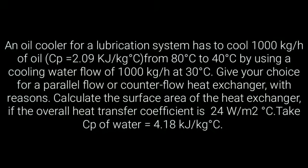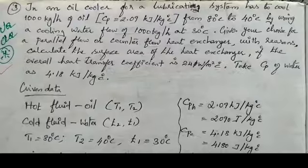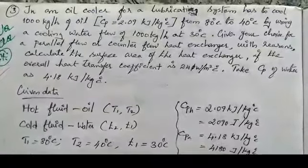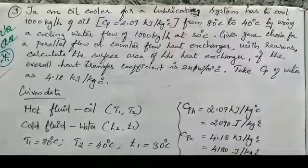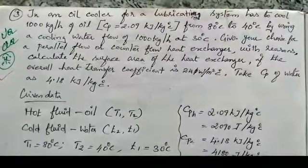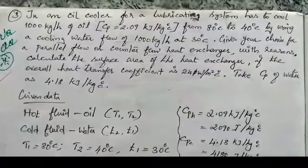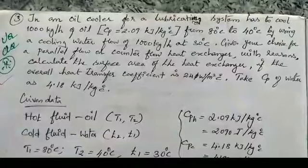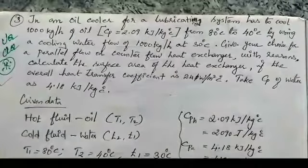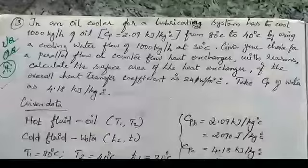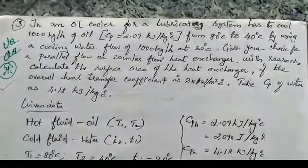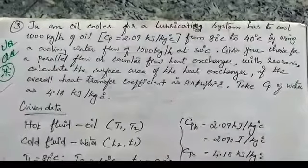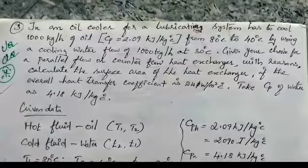Question 1: In an oil cooler for a lubricating system, we have to cool 1000 kg per hour of oil with CP 2.09 kJ per kg degree Celsius from 80 degree Celsius to 40 degree Celsius, by using a cooling water flow of 1000 kg per hour at 30 degree Celsius. Give your choice: parallel flow or counter flow heat exchanger with a reason, and calculate the surface area of the heat exchanger.